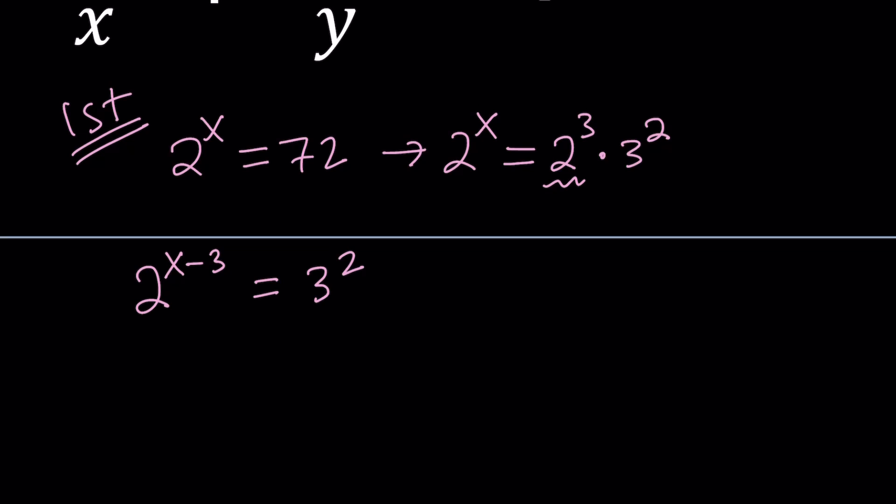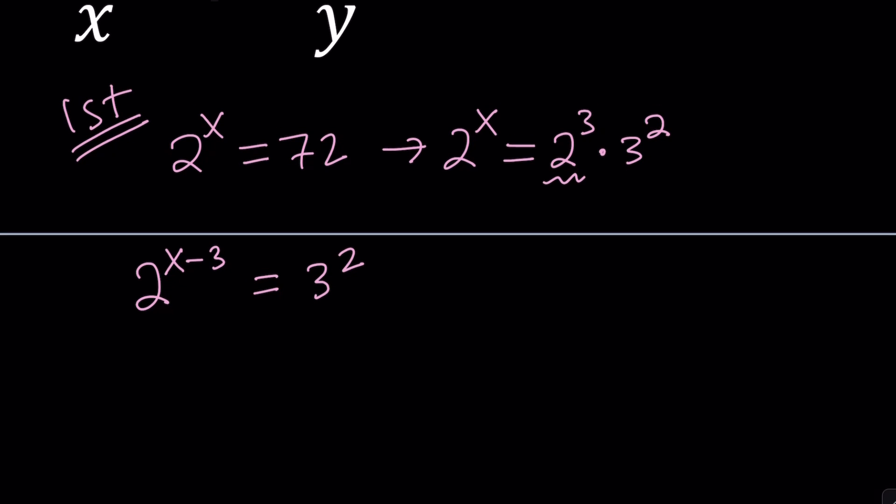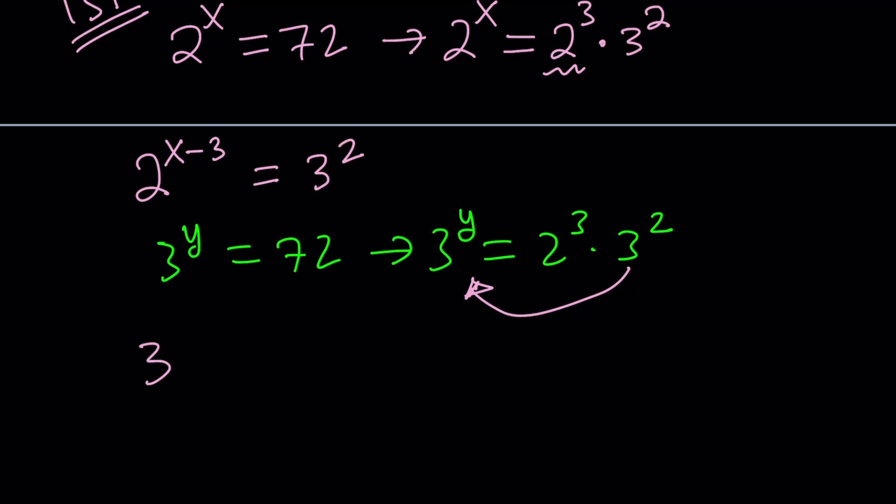And from here what I can get is, we'll take a look at it next. Let's go ahead and do the same thing for 3 and then we'll know what to do. So for the 3, 3 to the y equals 72, we'll do the same thing pretty much. Break down the 72 into 2 to the third times 3 to the second. But this time, instead of the 2, bring the 3 over here by way of division. And that's going to give you 3 to the power y minus 2 equals 2 to the third.